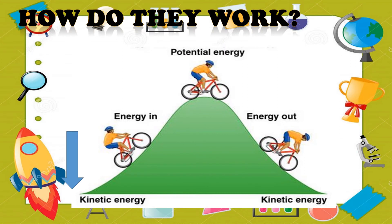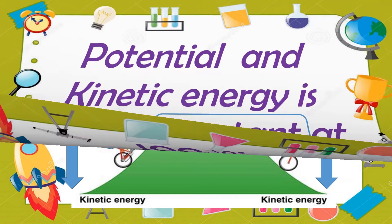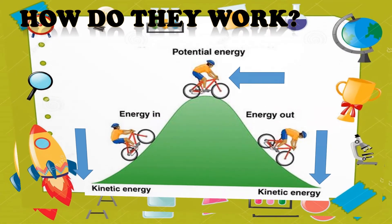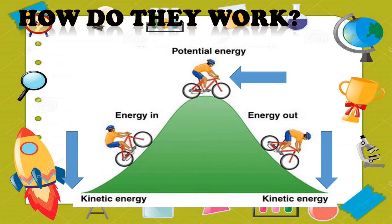But how do potential and kinetic energy work? Let's find out. Remember that potential and kinetic energy is always constant at 100%. Let's try to analyze the given situation. If the cyclist is at resting position, it has 100% potential energy and zero kinetic energy.